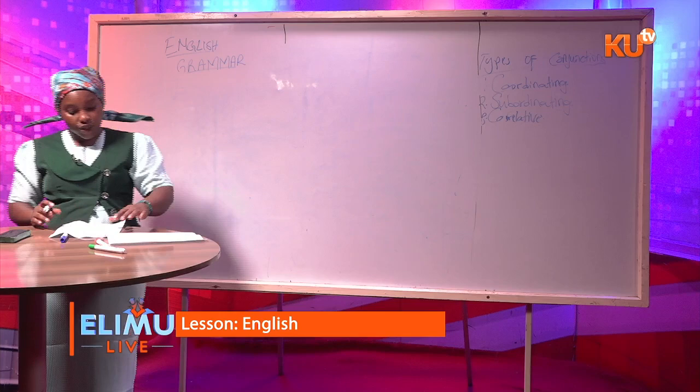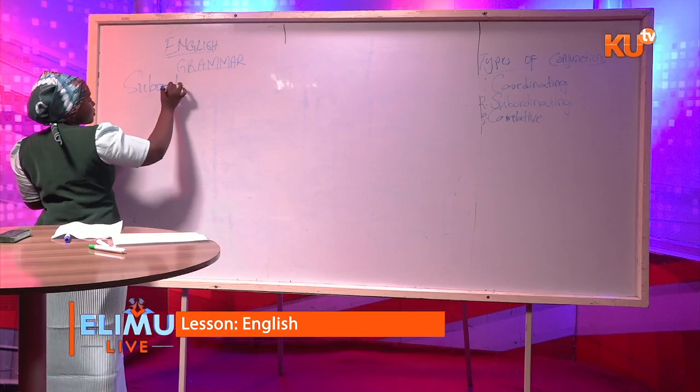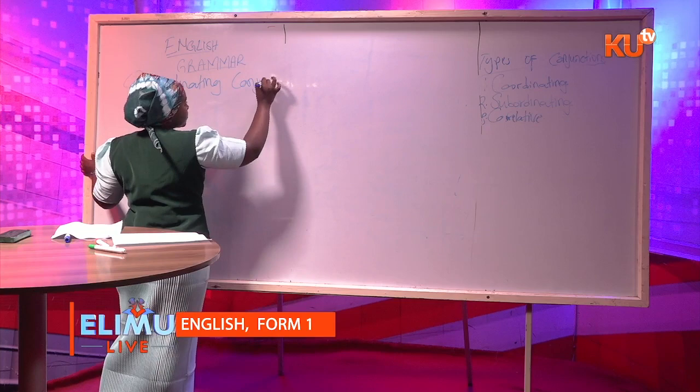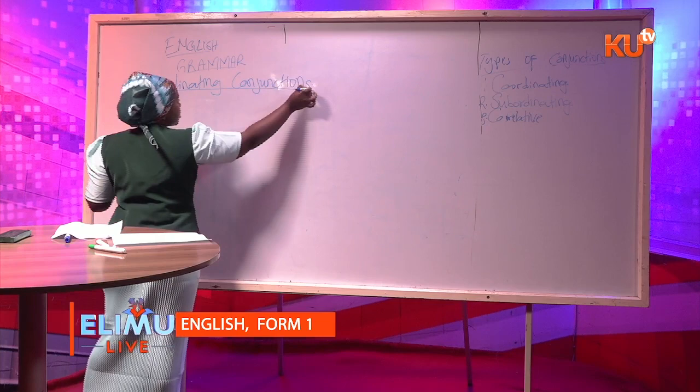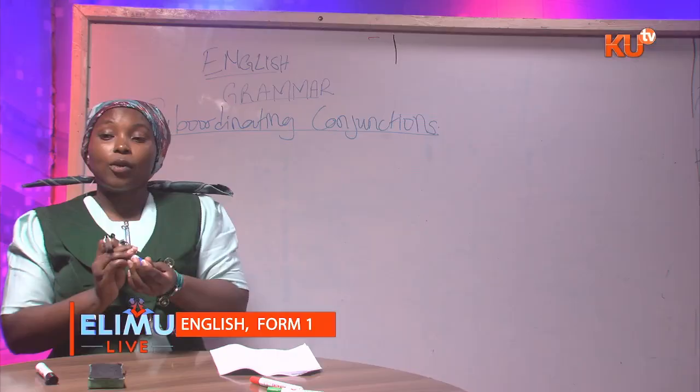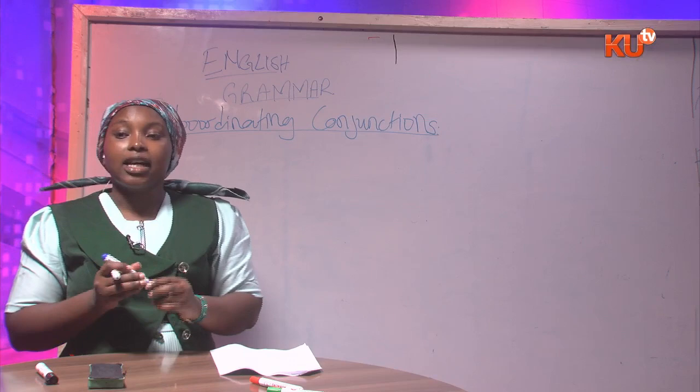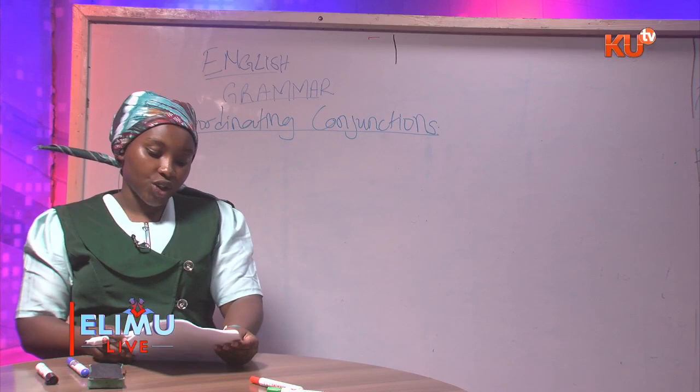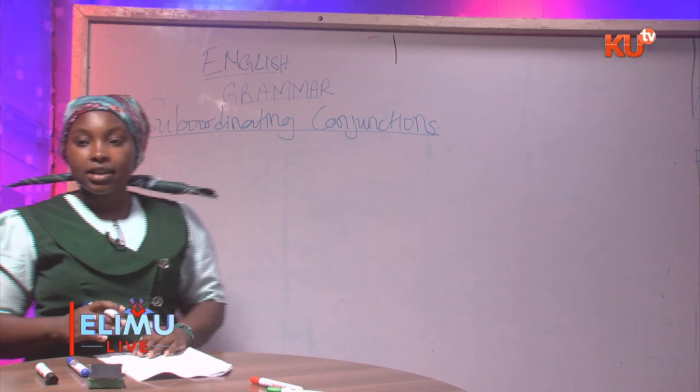The first question is: what are subordinating conjunctions? Conjunctions are very important because they help us know how parts of a sentence are linked together. Subordinating conjunctions are a bit complex. They are used to join subordinate clauses to the main clauses.